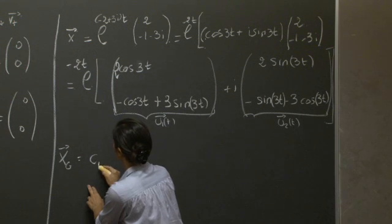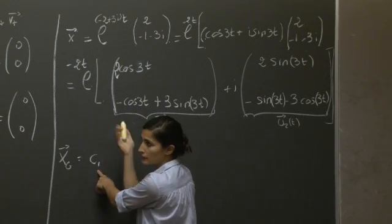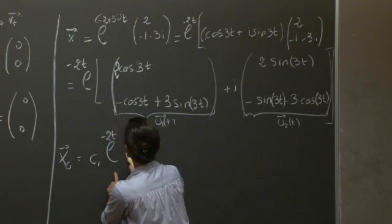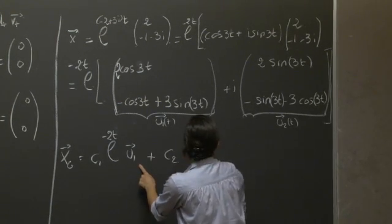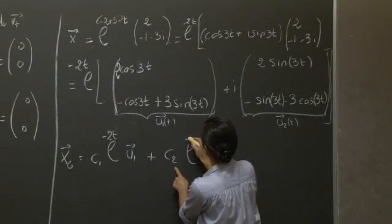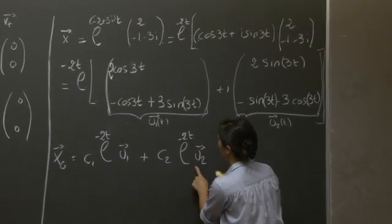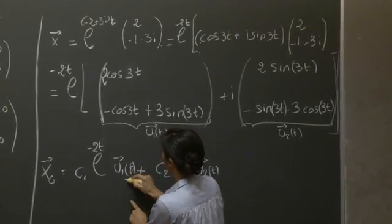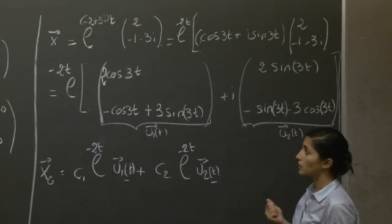And we can then write the general solution in terms of any constant that would be determined by the initial condition if we had one: c1 exponential minus 2t along u1 plus c2 exponential minus 2t along vector u2, which are also functions of t, which is the difference from what we had before.